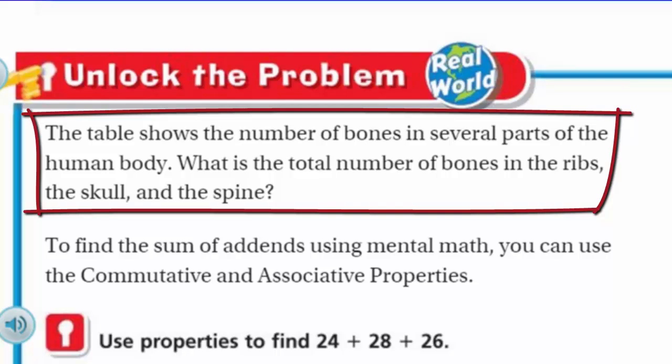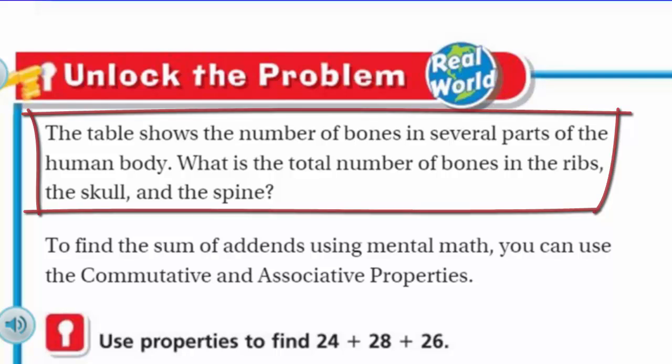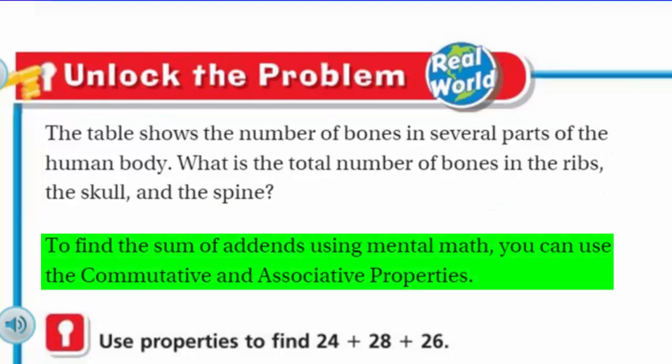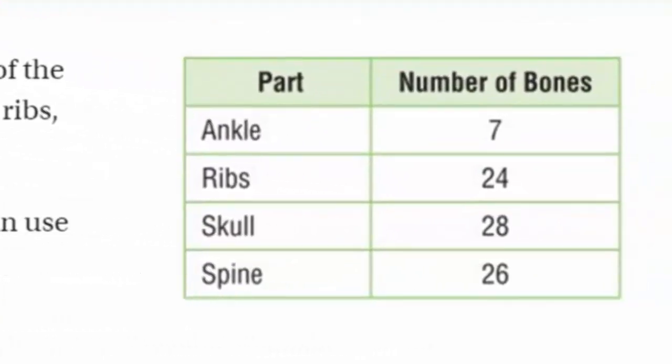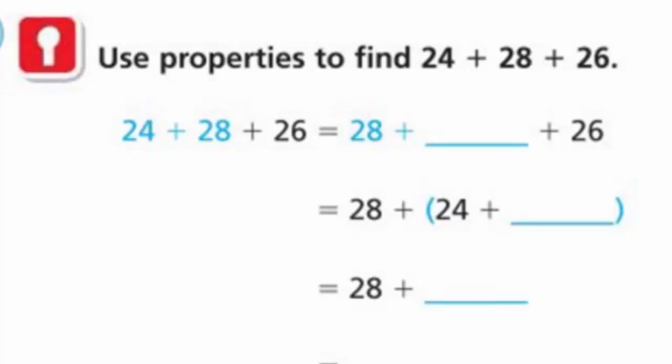And it says the table shows the number of bones in several parts of the human body. Whoa, cool. What is the total number of bones in the ribs, the skull, and the spine? I love these real world problems. It does say to find the sum of addends using mental math, you can use the commutative and associative properties, right? Because that's our focus. So I'm going to look over at our table here. Cool. Ankle 7, ribs 24. Wow. Skull is 28 and the spine is 26.